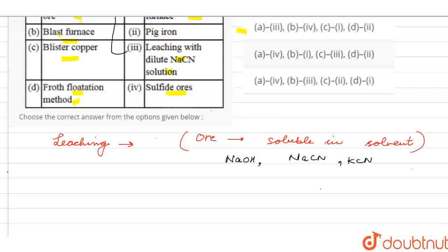So, if I talk about Al2O3, when we do Leaching with NaOH, what is formed? Sodium Aluminate, NaAlO2, plus water, and impurities. Okay?